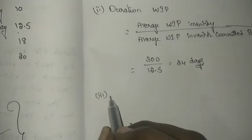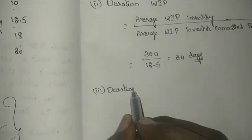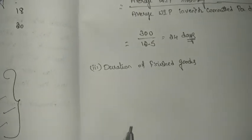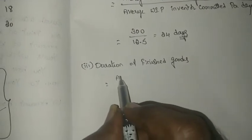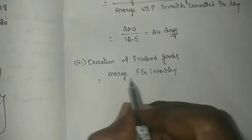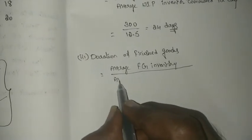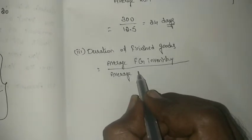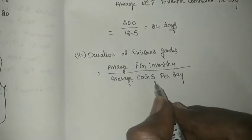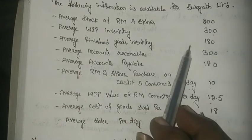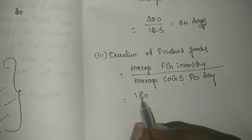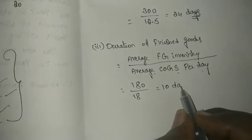Next, they are asking to calculate the duration of finished goods. The formula remains the same structure: average finished goods inventory divided by average cost of goods sold per day. Since the product is ready at this stage, we consider the cost of goods sold per day. Average finished goods inventory is 180 and average cost of goods sold per day is 18. So 180 divided by 18 gives a duration of finished goods of 10 days.